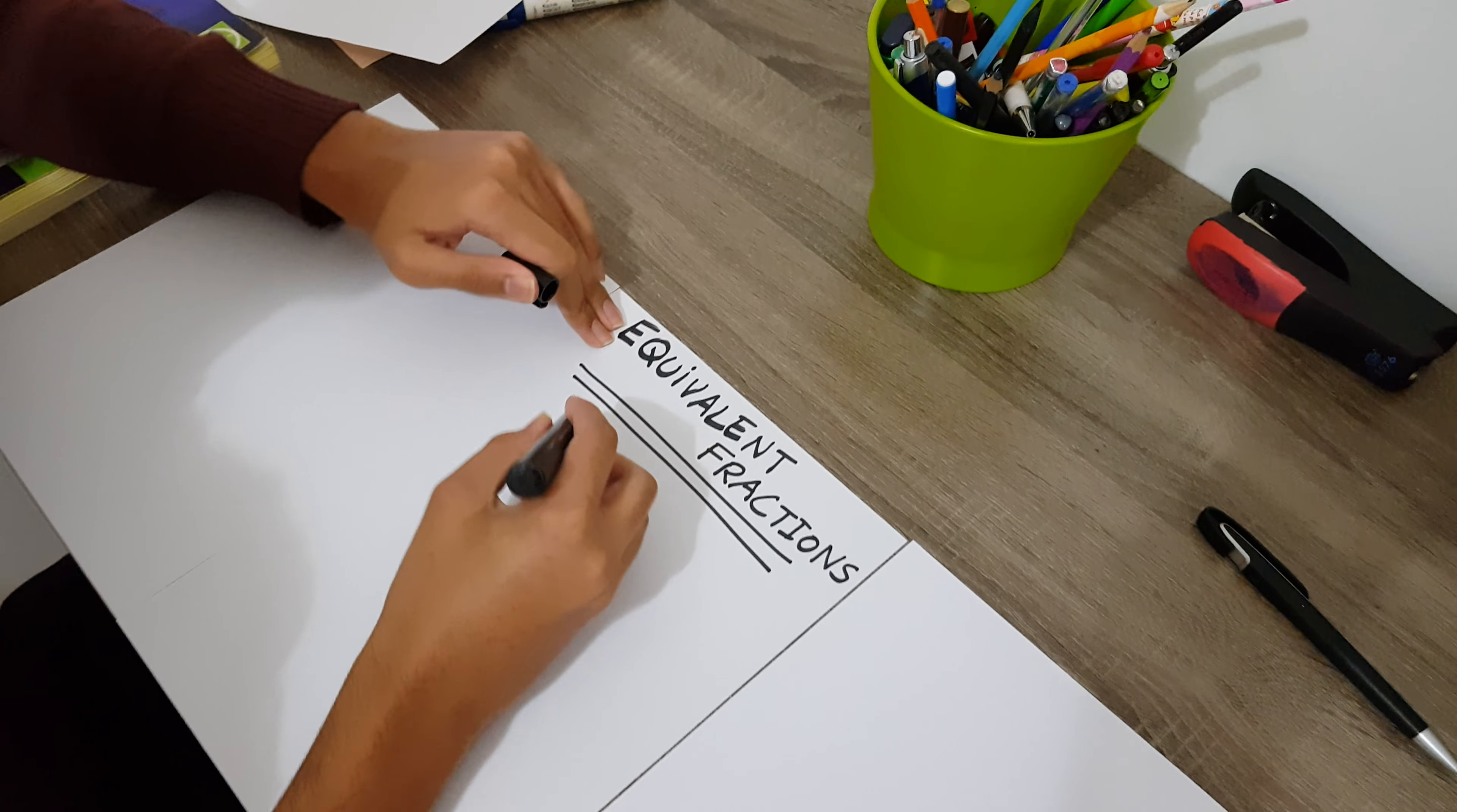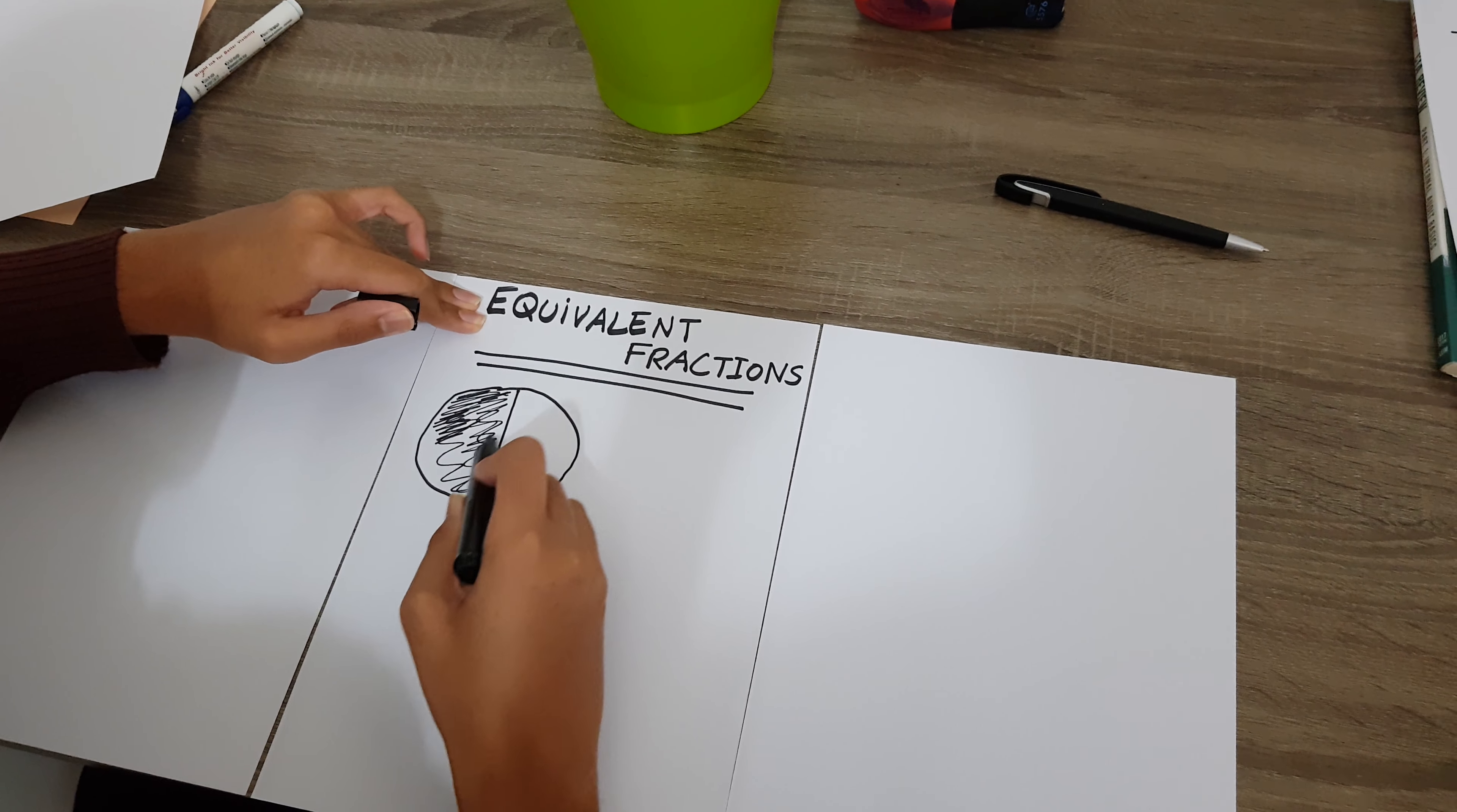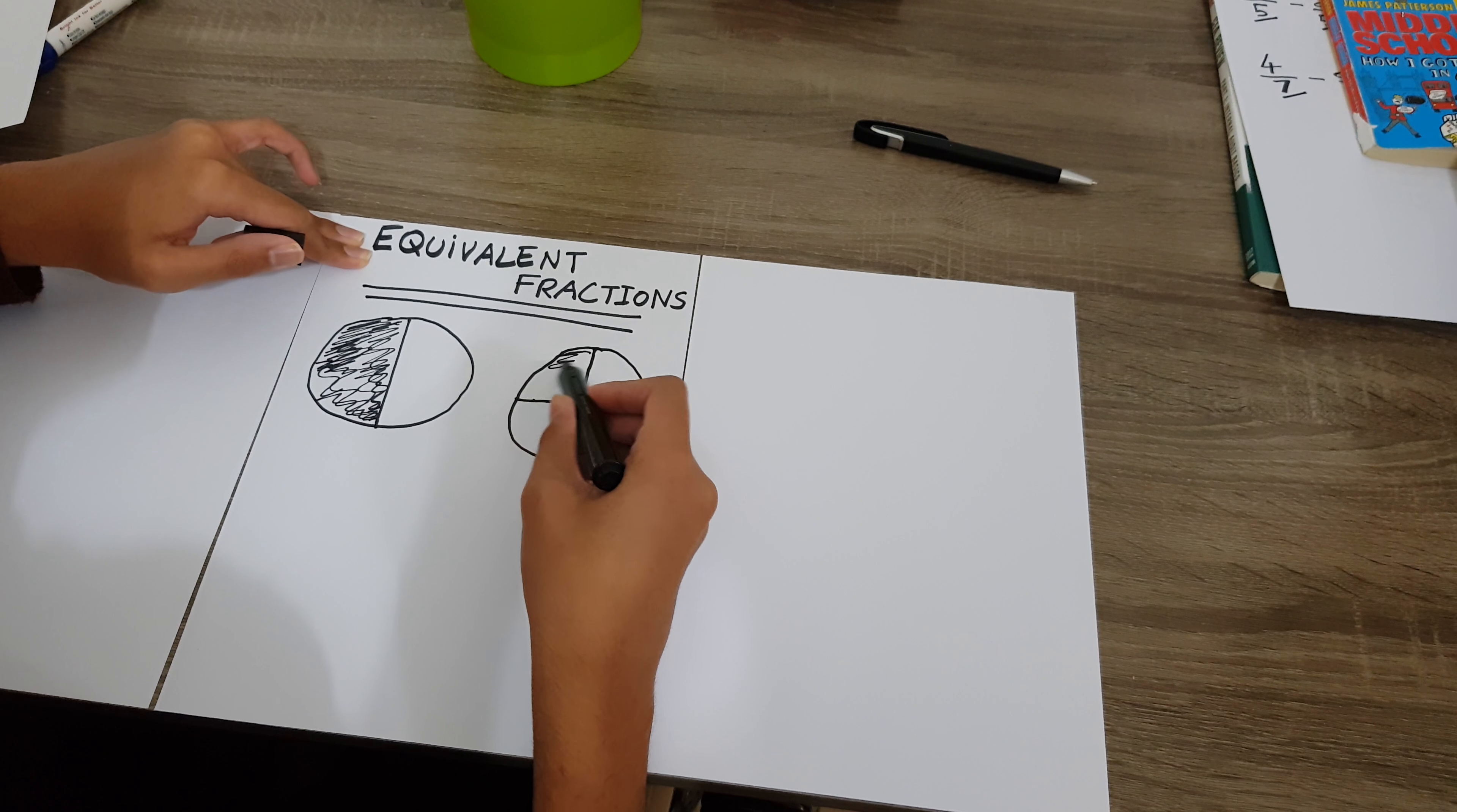Suppose you order a pie and it's cut into two pieces, and you ate one half of the pie. And next day, you order another pie which is the same size. Now this pie was cut into four pieces, but you ate two slices of that.